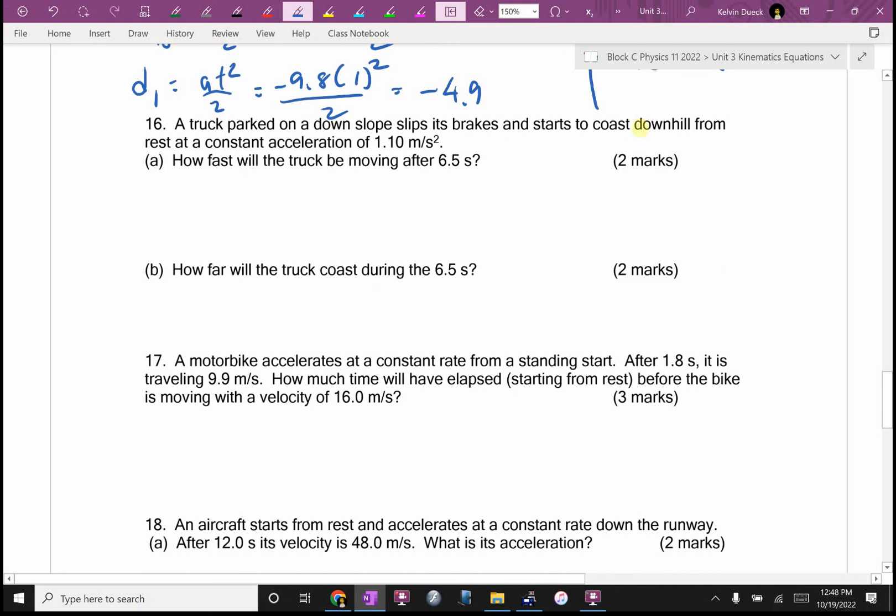Number 16 is a bit interesting. I had some people who saw the word downhill, and they said, should I make that acceleration negative? I'm fine if you did that, and if you were consistent all the way through, that works. I chose to imagine downhill as going forwards, and so I kept the acceleration positive. They want me to find VF. I said VF is going to be AT. VI is zero, because it slips, it breaks. It's going to be 1.1 times 6.5. 7.15 meters per second.